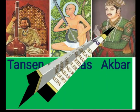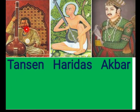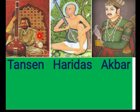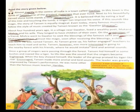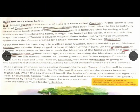Can you see the picture of Tansen? This is Tansen, this is Haridas — Haridas was Tansen's teacher — and this is Emperor Akbar. Now let's get started with the story.